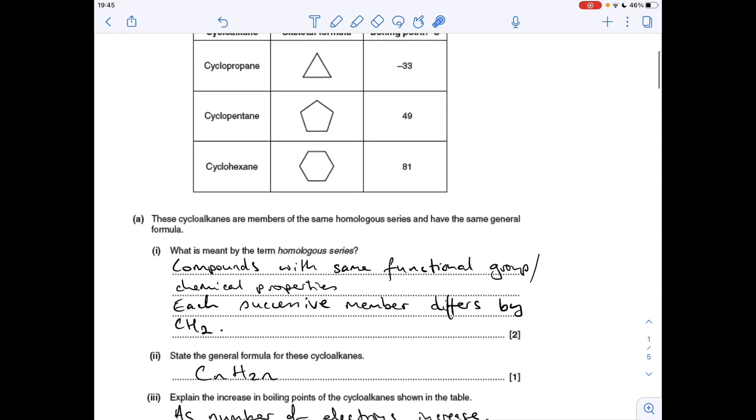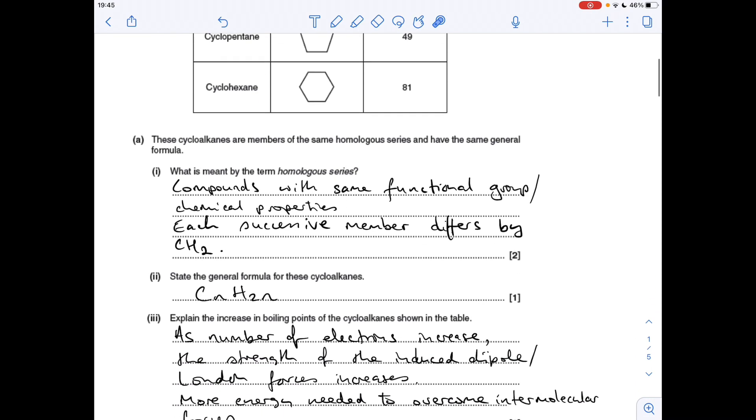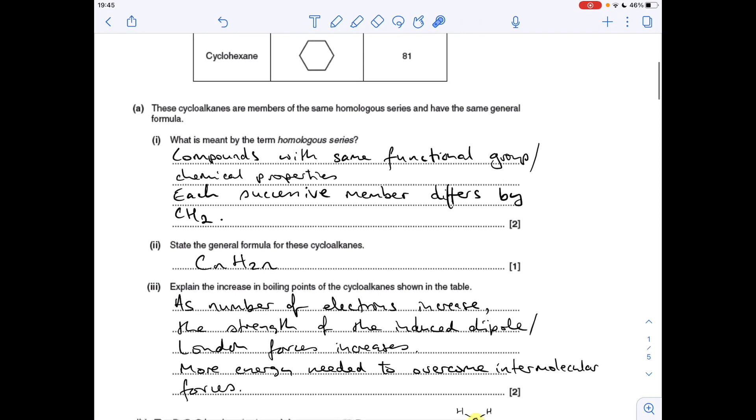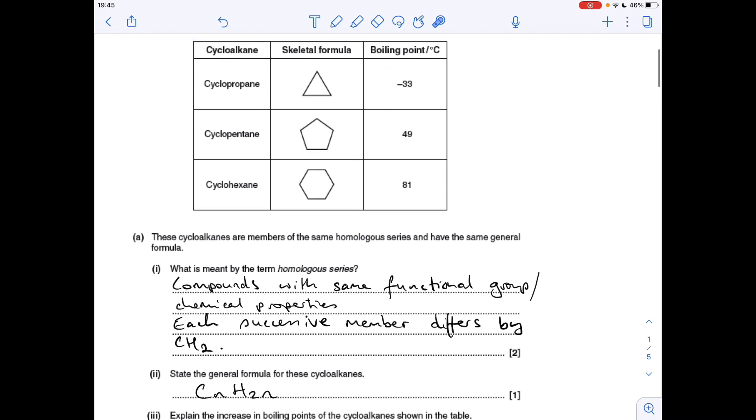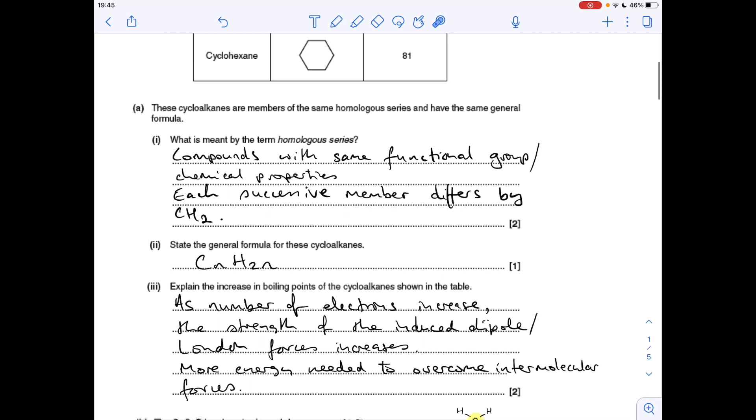Now we've got to explain the increase in the boiling points of the cycloalkanes. You can see clearly as the number of carbon atoms in the molecule increases, so does the boiling point. That's down to the strength of the intermolecular forces between the molecules.